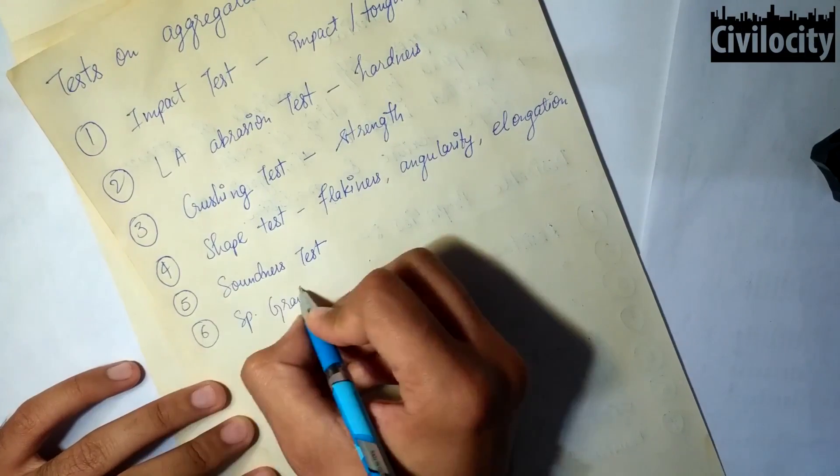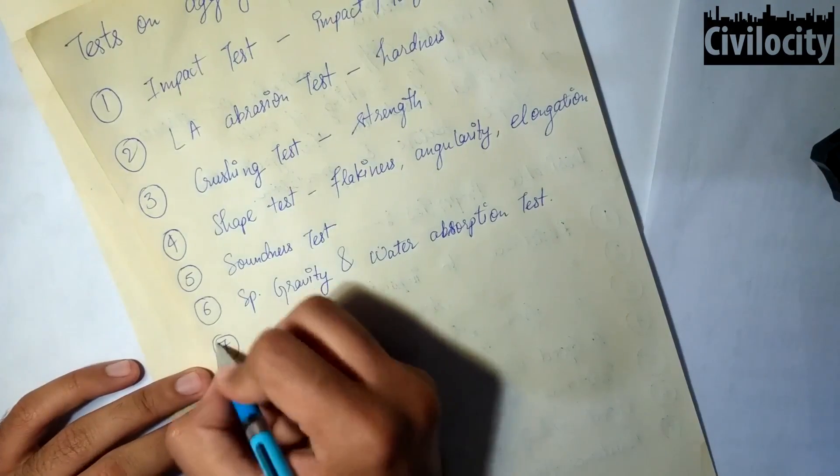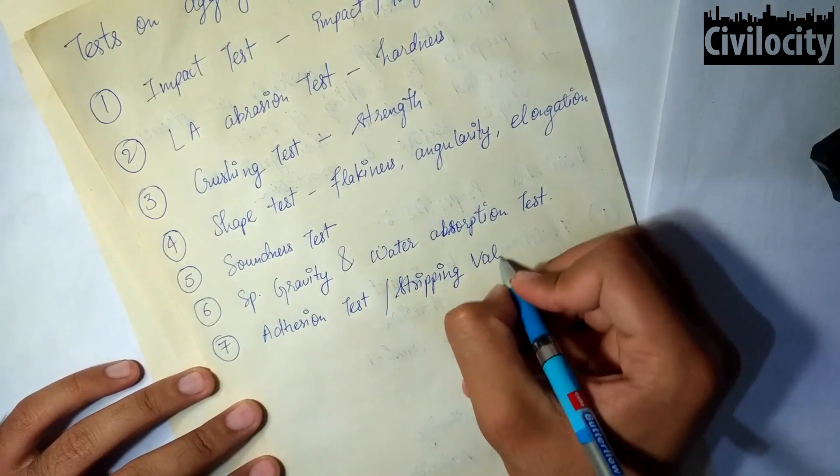The sixth one is the specific gravity and water absorption test to find out the porosity. And the seventh one is the adhesion test or stripping value test to find out the stripping value.